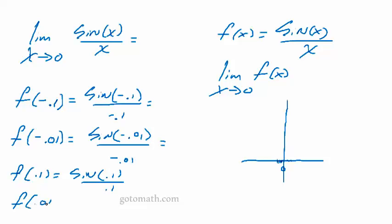Sine 0.01 over 0.01. And get these numbers out, whatever they are.